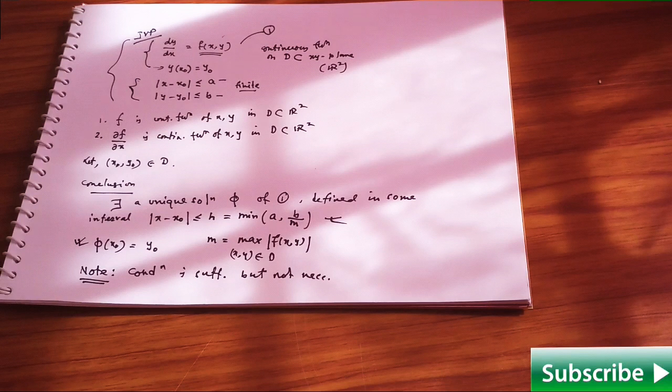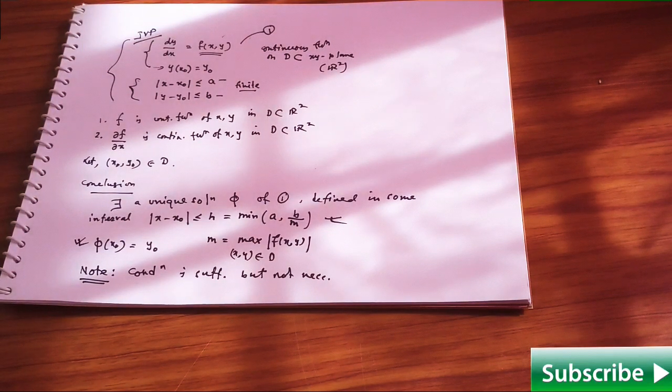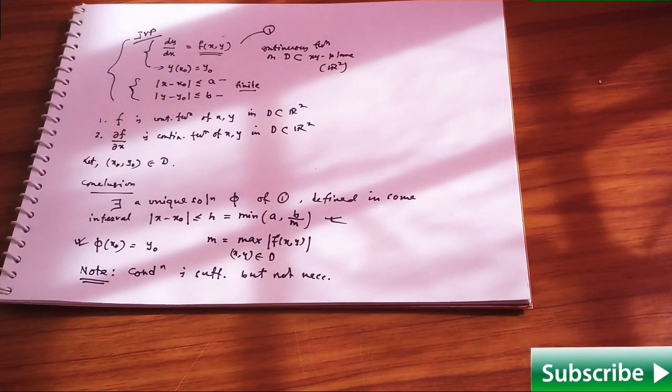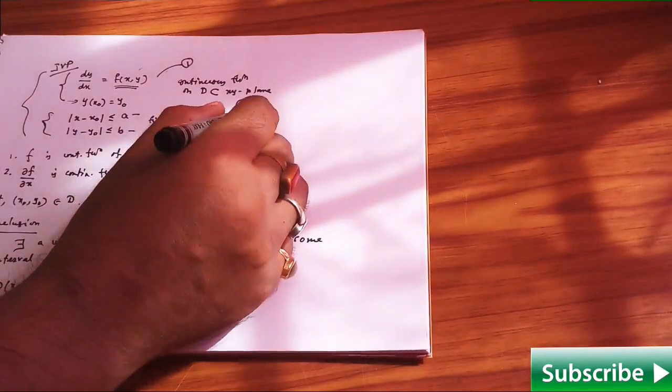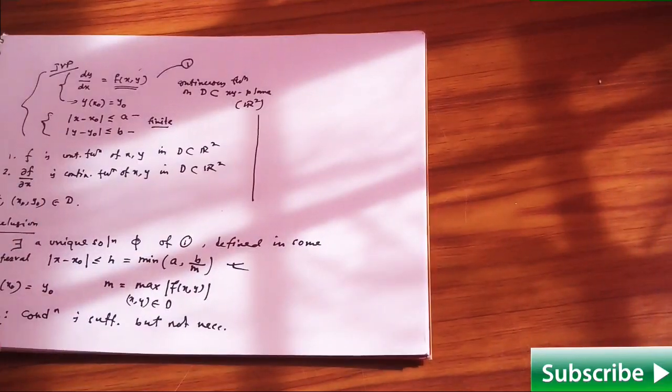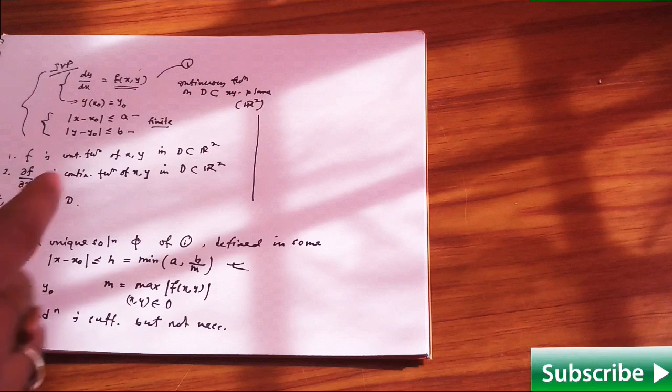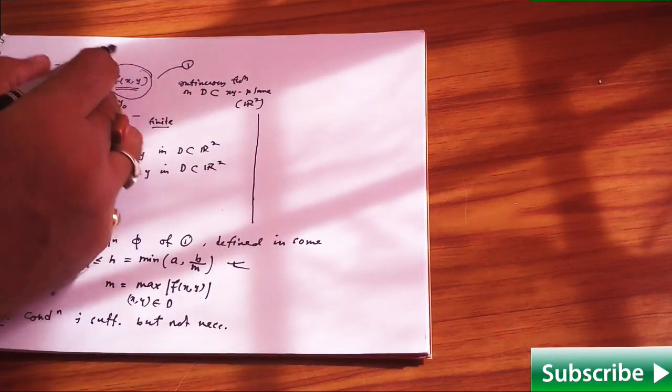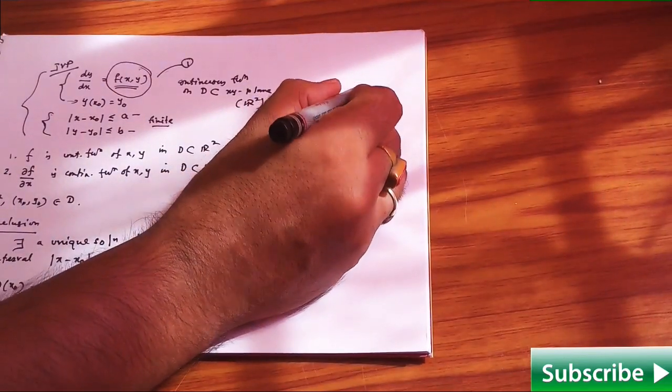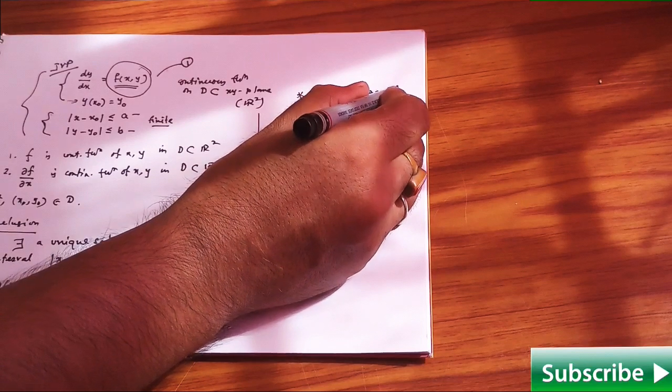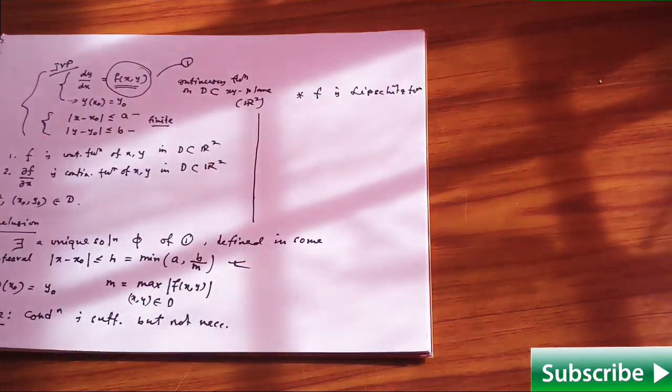One thing here comes: it is another one-sided result. Whenever f satisfies Lipschitz condition, whenever this comes in front of you, then this f is a Lipschitz function in that given domain D.